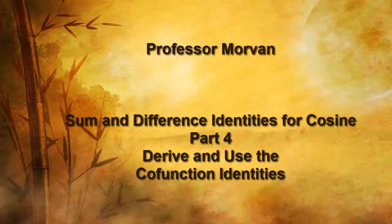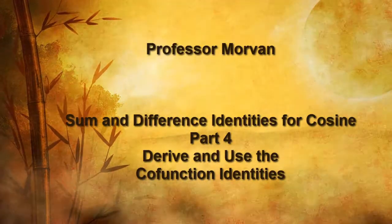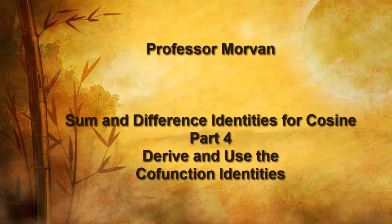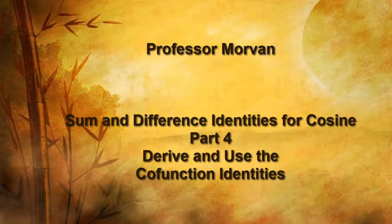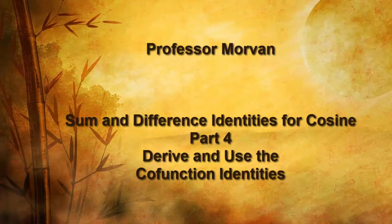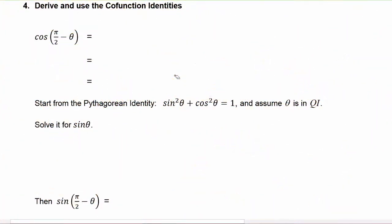In part four of our lesson on sum and difference identities for cosine, we will derive and use the co-function identities. Recall that the cosine of A minus B is equal to the cosine of A times the cosine of B plus the sine of A times the sine of B.